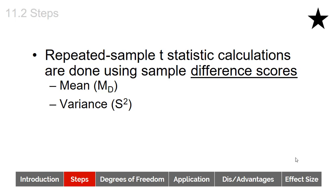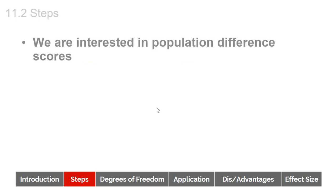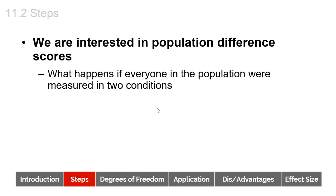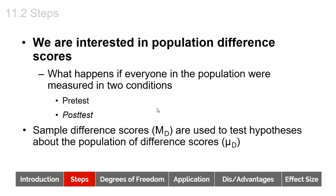Repeated measures t-statistic calculations use sample difference scores, looking for differences in those means, and we estimate the variance in the population from the sample. We're interested in population difference scores — what would happen if everyone in the population were measured in two conditions, with a pre-test and a post-test. Sample difference scores are used to test hypotheses about the population of difference scores. We're always making inferences about the populations the samples come from, not just saying one sample differs from another.